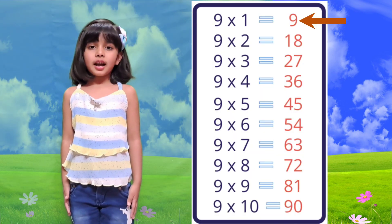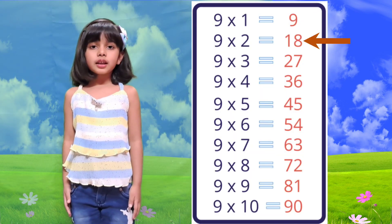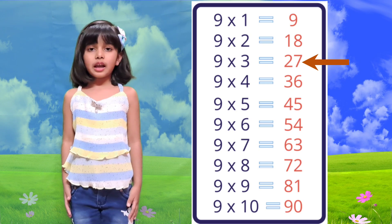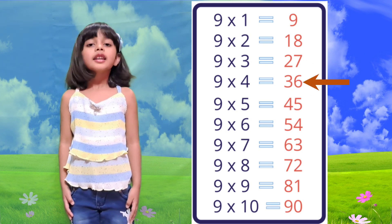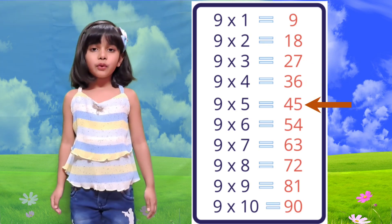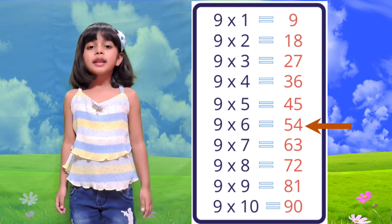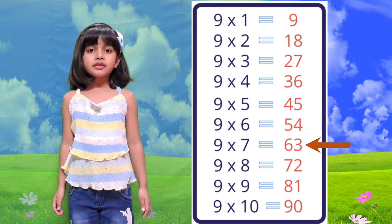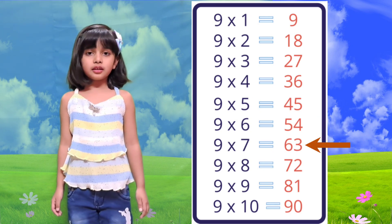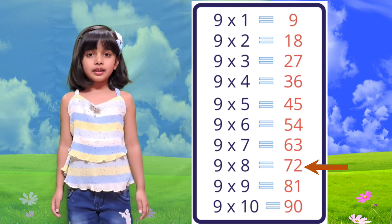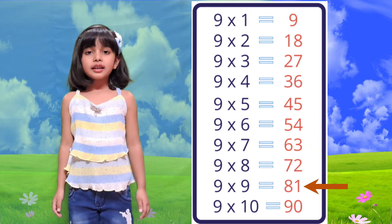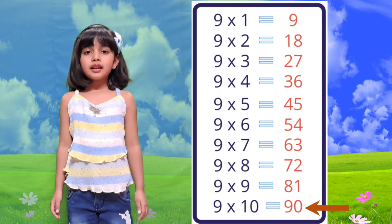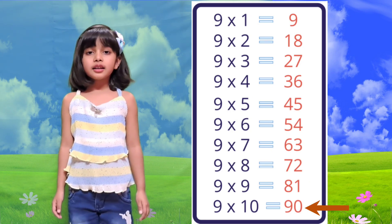Table of 9. 9 1 is 9, 9 2 is 18, 9 3 is 27, 9 4 is 36, 9 5 is 45, 9 6 is 54, 9 7 is 63, 9 8 is 72, 9 9 is 81, 9 10 is 90.